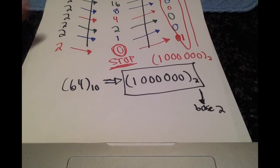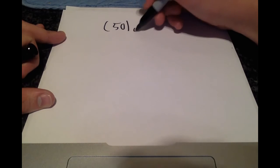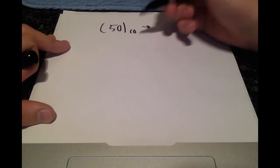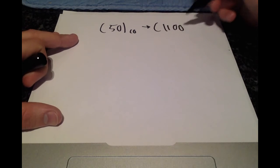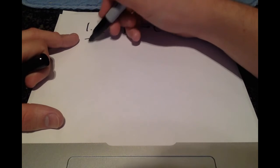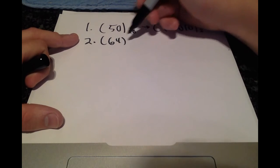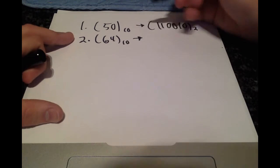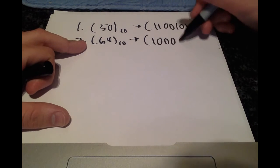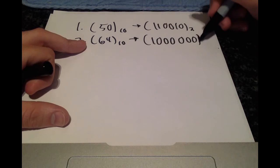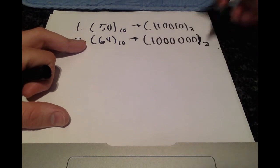Just real quick, I want to show you something from the other video where I convert numbers to base 10. The two results we got: 50 base 10 is 110010 base 2, and our second result was 64 base 10 is equal to 1 followed by 6 zeros in base 2.